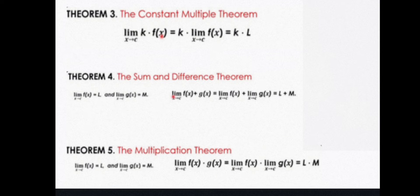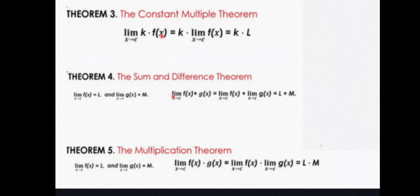We have Theorem 5, the multiplication theorem. The limit of f(x) times g(x) as x approaches c is equal to the limit of f(x) times the limit of g(x) as x approaches c, which equals L times M.